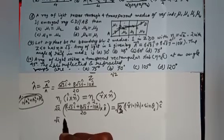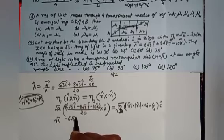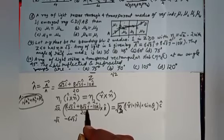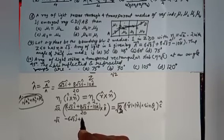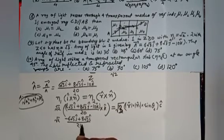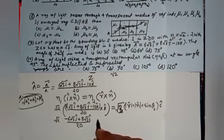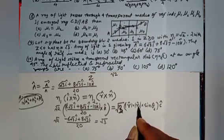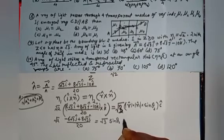Now carrying out the cross multiplication: i-cap × k-cap = −j-cap, so that term gives −6√3 j-cap. j-cap × k-cap = i-cap, giving +8√3 i-cap. And k-cap × k-cap = 0, so that term vanishes. All divided by 20. This equals root 3 times the refracted unit vector sine theta2 times some unit vector c-cap.